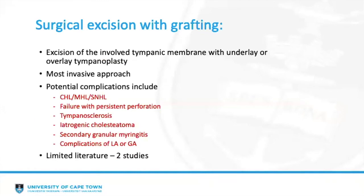The final modality is excision of the involved tympanic membrane with underlay or overlay grafting — essentially a myringoplasty or tympanoplasty. Any graft materials can be used, including autografts and homografts ranging from temporalis fascia, perichondrium, periosteum, cartilage, and skin, or even xenografts like the biodesigned porcine graft.